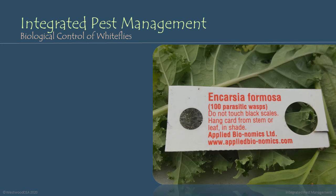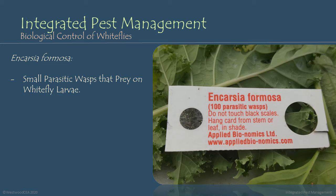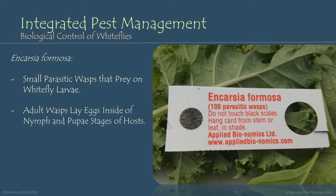Looking at biological control of whiteflies and beneficial insects used to combat them, the go-to is often Encarsia formosa. These are small parasitic wasps that prey on whitefly larvae. Similar to how aphidiid wasps attack aphids, adult Encarsia wasps lay their eggs inside the nymph and pupal stages of their hosts.